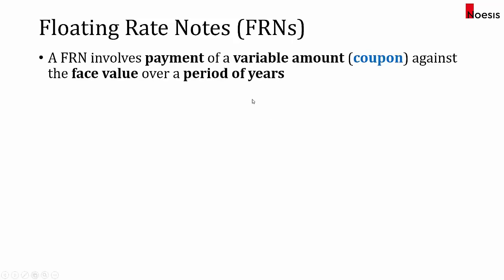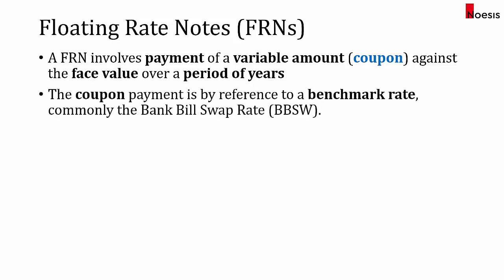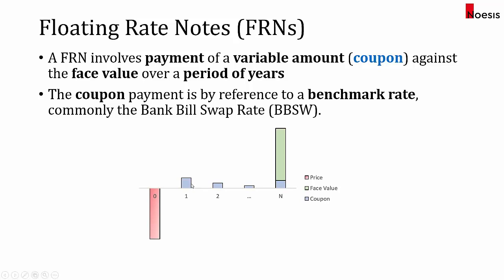In the last part, let's look at floating rate notes, or FRNs. This is different from fixed rate bonds because the coupons will not be fixed. An FRN involves payments of a variable coupon amount against a face value over a period of years, and the coupon payment will be benchmarked to a reference rate, or benchmark rate. In Australia, this is called the bank bill swap rate, BBSW. Looking at the timeline, the cash flow bars do not have the same vertical height, which tells us the coupon varies from period to period.